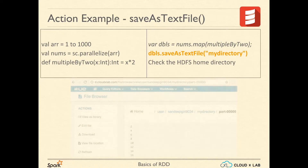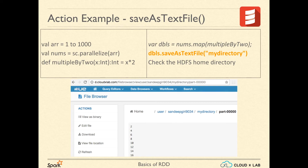Now let's log into Hue. Click on file browser and sort the folder by date in descending order. You will see a folder with the name my directory. Click on it — inside, you will see files with names starting with part-dash. You can see what's inside each file by clicking on any of them. The data of our RDD has been saved in these files in HDFS.